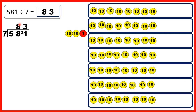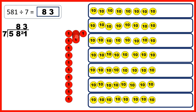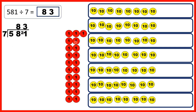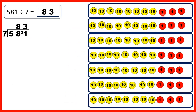But then we have 2 tens that we can't share out, so we have a remainder of 2 tens. We write that remainder in front of our ones digit, because we can exchange each of our remaining 10 counters for 10 ones, giving us 21 ones to share out. When we do that we get 3 ones in each group to give us our answer 83.